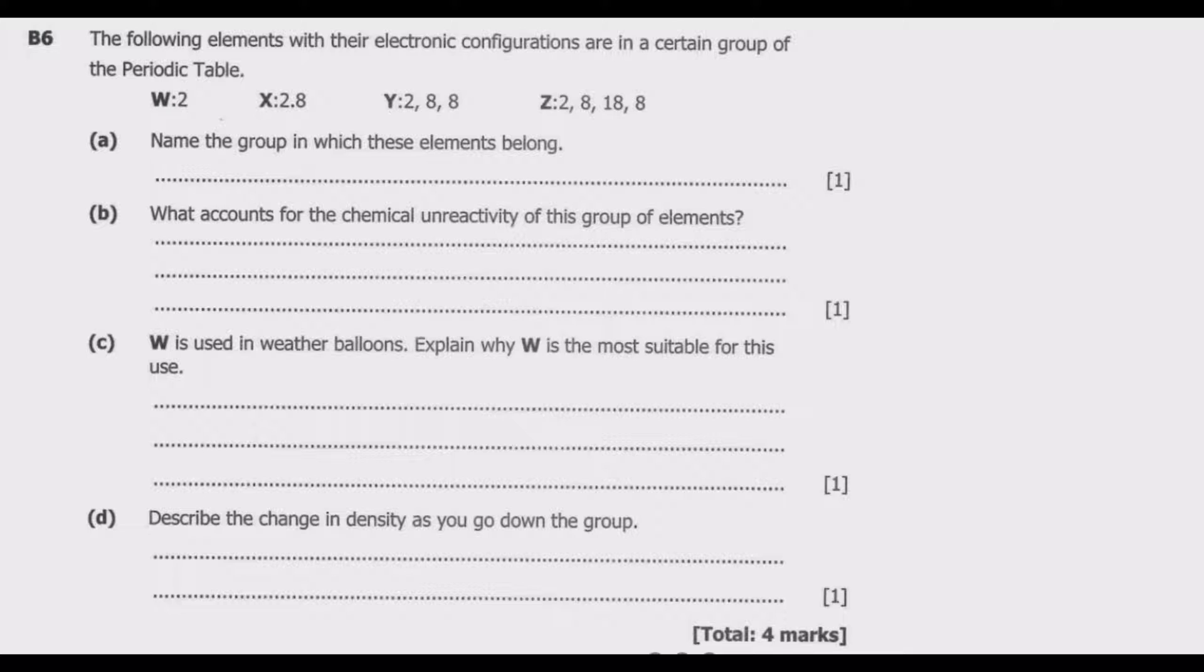Question (a): Name the group in which these elements belong. To tell the group in which an element belongs, you need to look at the number of electrons in the outer shell. The number of electrons in the outer shell determines the chemical properties of that element and the group in which it belongs.